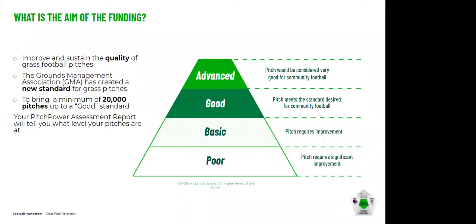The aim of the funding is to improve and sustain grass pitch quality. The GMA have created a new standard for grass pitches with the aim of a minimum of 20,000 pitches in England reaching a good standard. Your Pitch Power assessment report will tell you what level your pitches are currently at — rated as poor, basic, good, or advanced — and Tom will go into more detail on the standard later on.